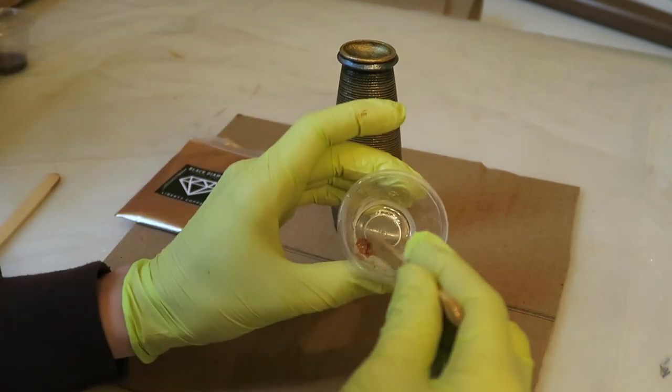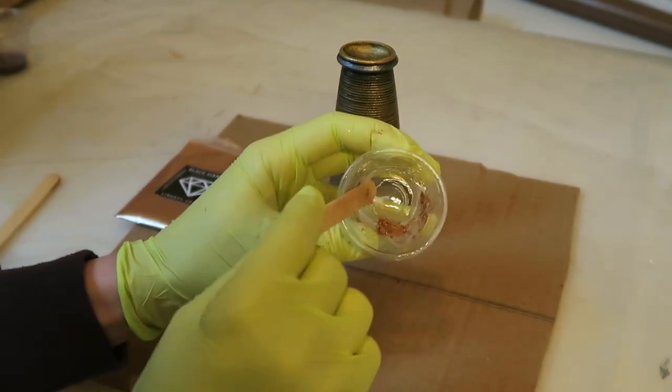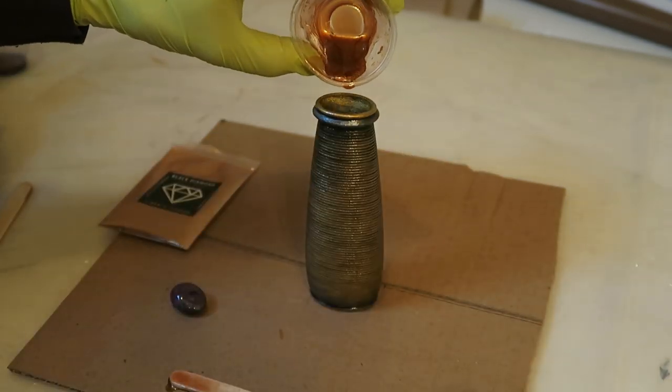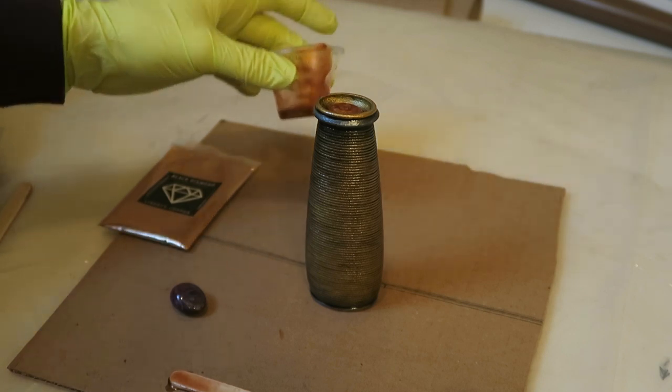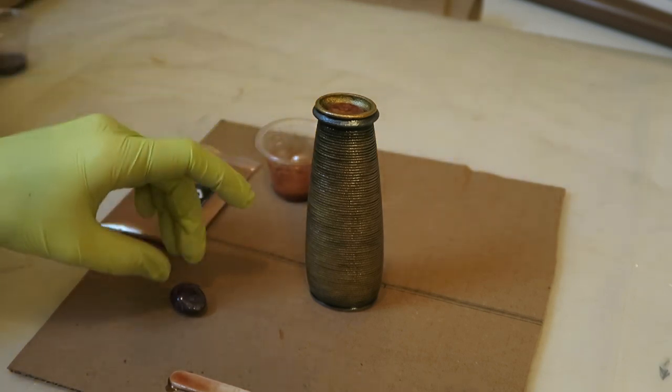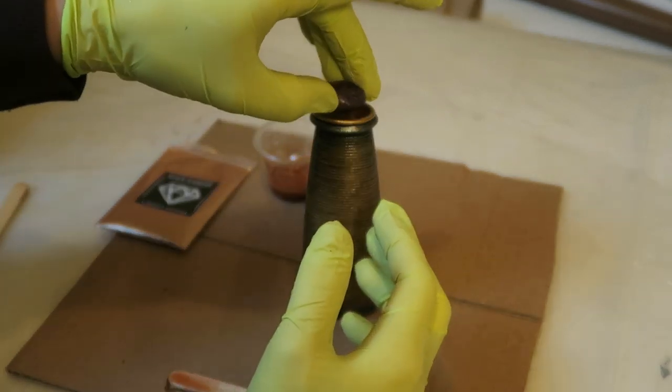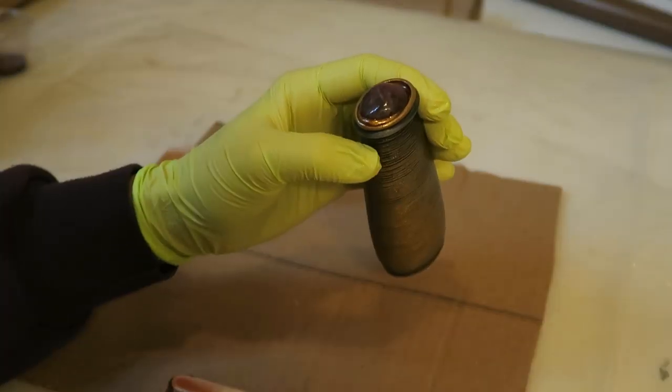To put this in place, I mixed up a bit of epoxy resin and I added some kind of copper gold mica powder so that any of the areas that show up on the sides will look cohesive with the rest of the design. The stone was placed into the epoxy and any excess was wiped away.